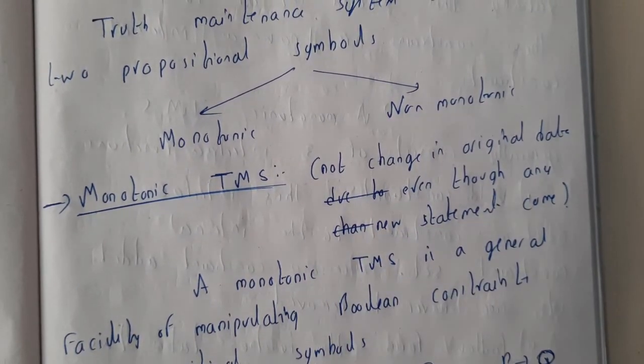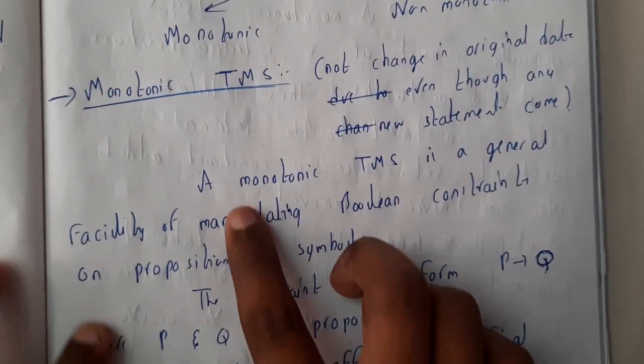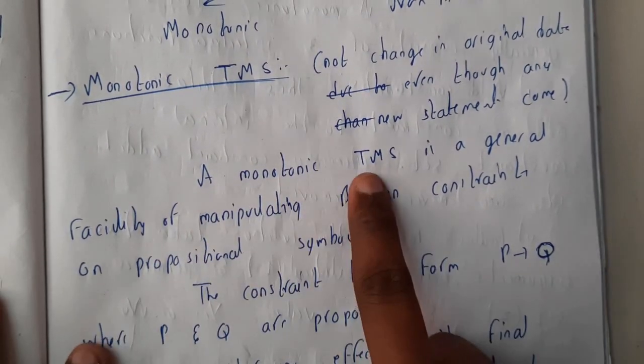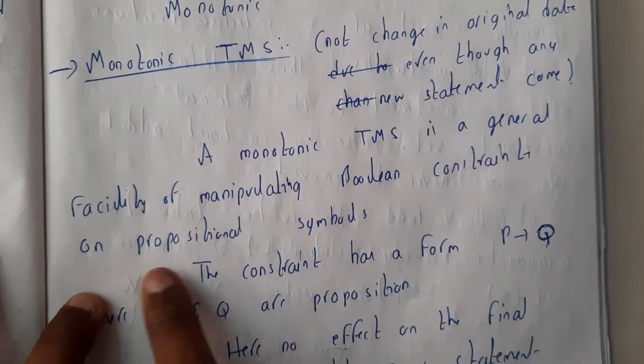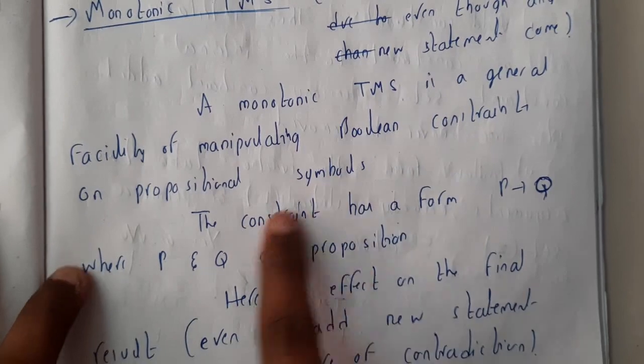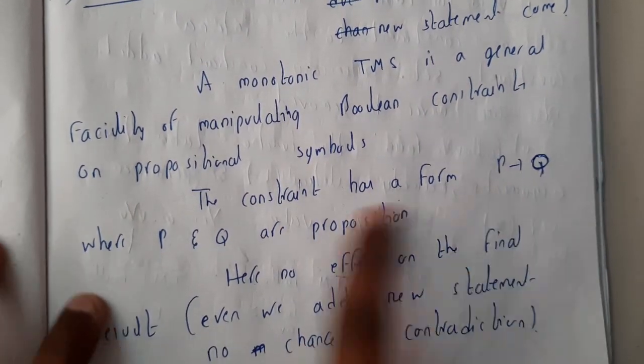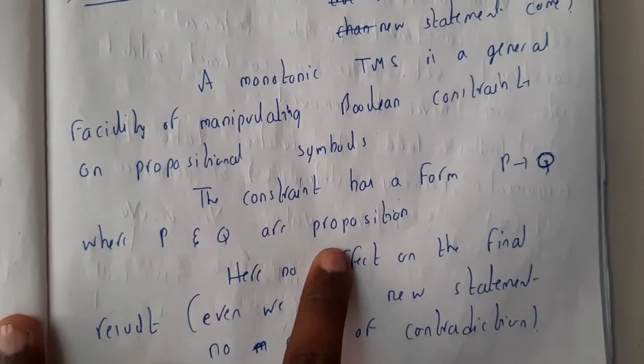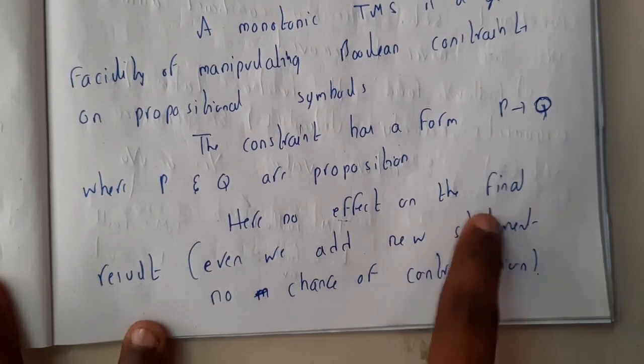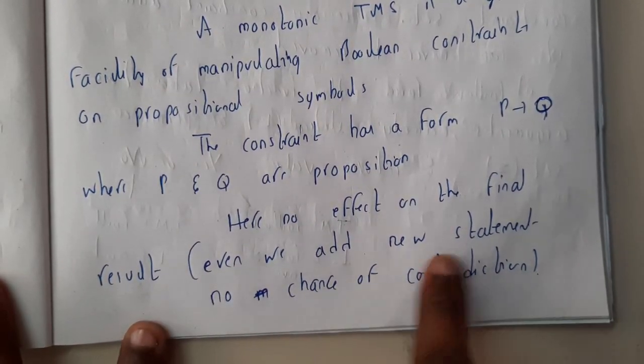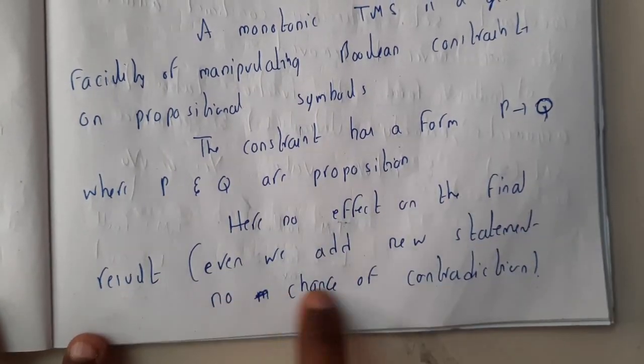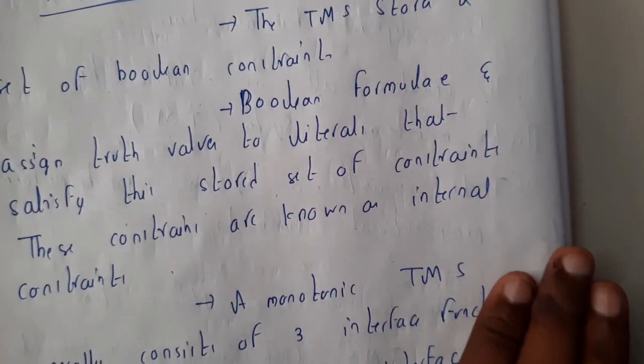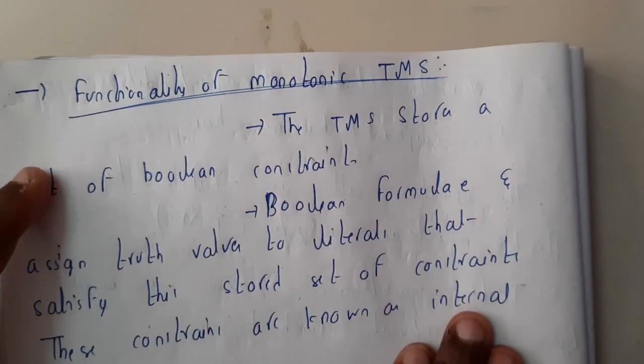So let us go to the definition. A monotonic TMS is a general facility of manipulating boolean constants on propositional symbols. So the constant has a form of p tends to q where p and q are the propositions. So here no effect on the final result even we add a new statement, no change of contradiction. So there will be no change in the previous value.